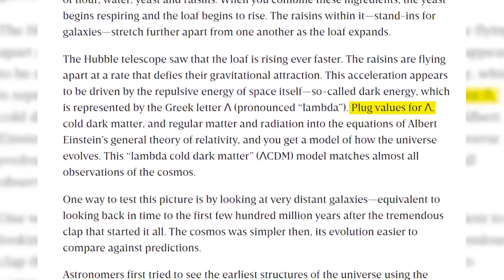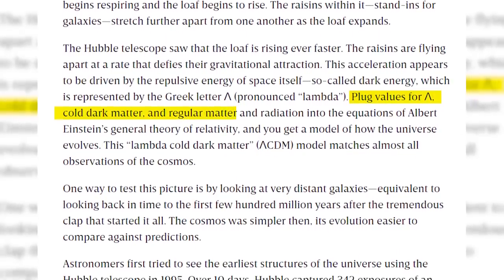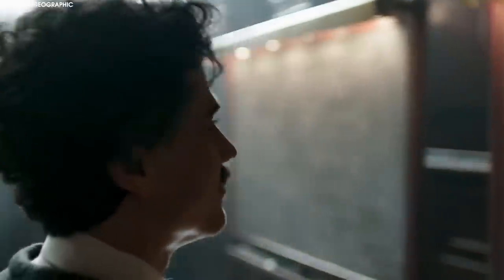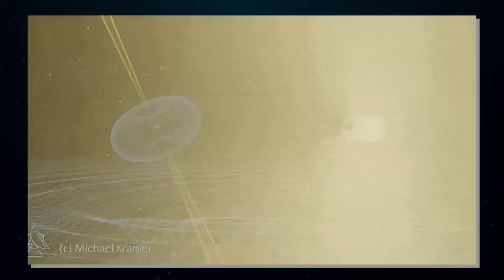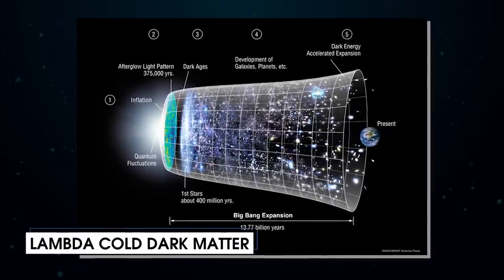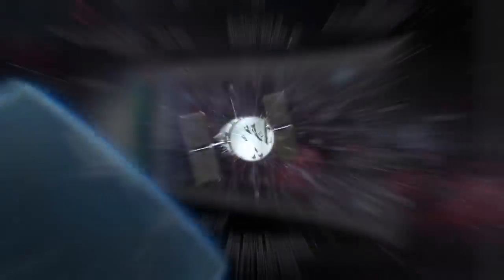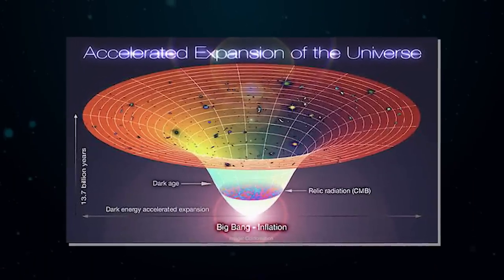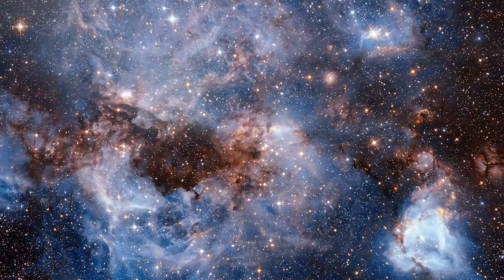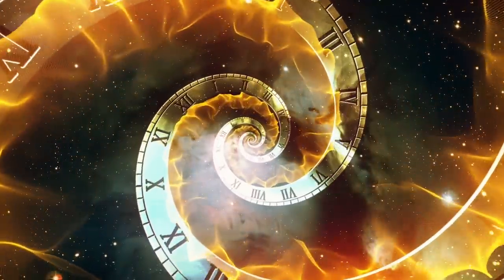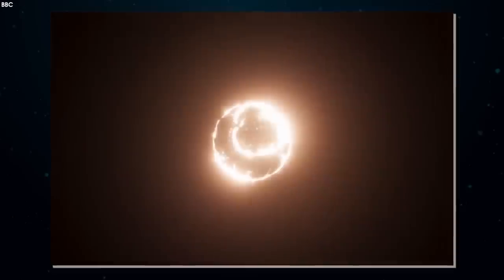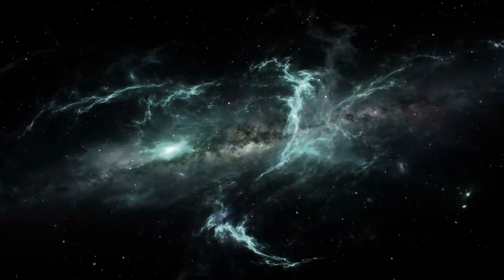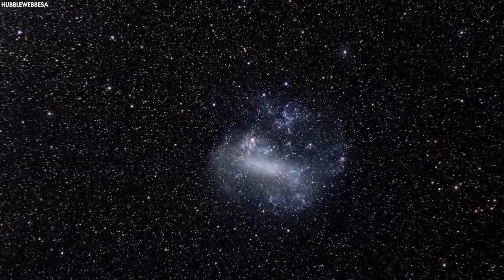Plug values for lambda, cold dark matter, and regular matter and radiation into the equations of Albert Einstein's general theory of relativity, and you get a model of how the universe evolves. This lambda cold dark matter, ΛCDM model matches almost all observations of the cosmos. One way to test this picture is by looking at very distant galaxies, equivalent to looking back in time to the first few hundred million years after the tremendous clap that started it all. The cosmos was simpler then, its evolution easier to compare against predictions.